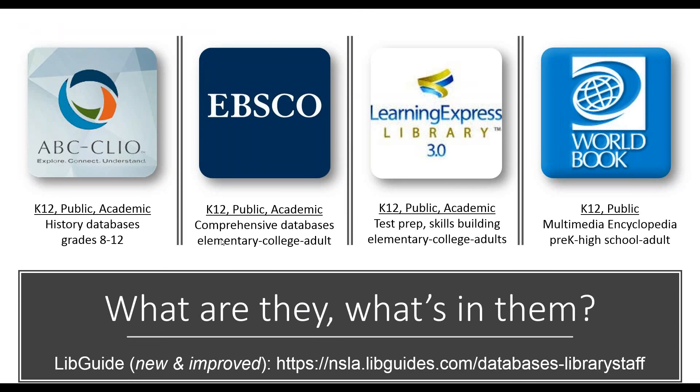We have these statewide databases — what are they, and what's in them? Currently we have four. With the funding available and our purchasing power as a state, we were able to buy four. ABC-CLIO — we have licenses for K-12, public, and academic libraries. We have the student edition of ABC-CLIO, aimed at grades 8 through 12. We have EBSCO, which is a comprehensive database, also available for K-12, public, and academic libraries. The target audience goes from elementary to college to adult.